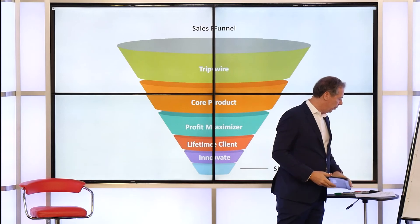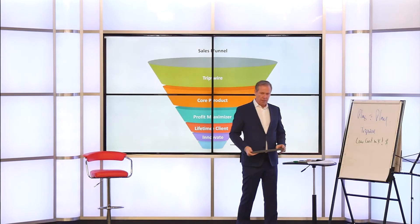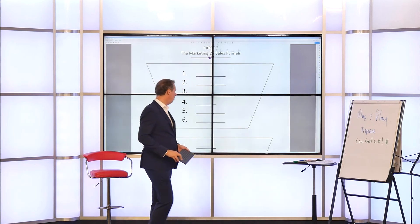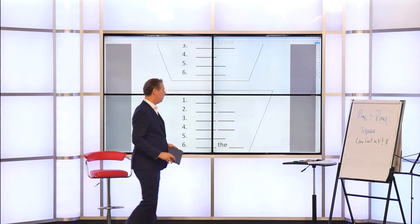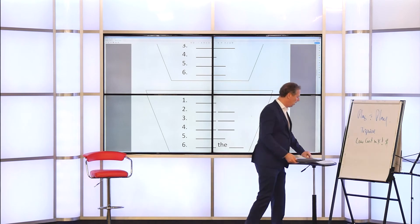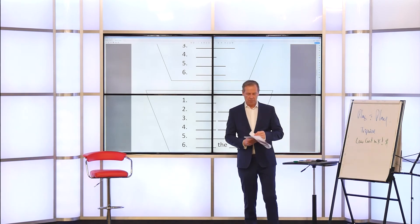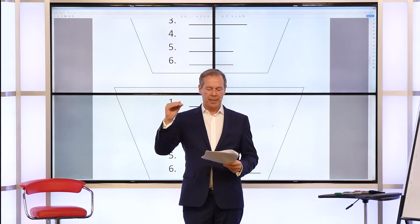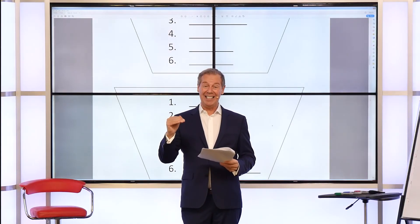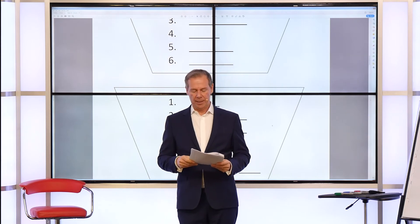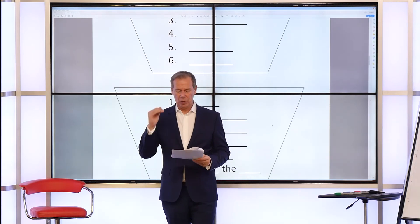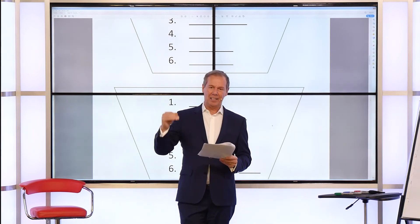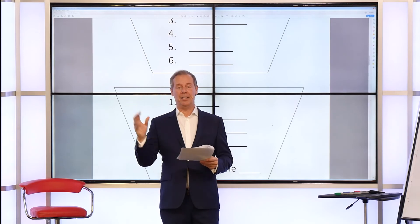Turning back to the PDF, I've given you the six areas to fill out. Let's go through them one more time. The marketing funnel: awareness, interest, consideration, intent, evaluate, then purchase. And then the sales funnel: tripwire, core product, profit maximizer, lifetime client, innovate, and sky's the limit.